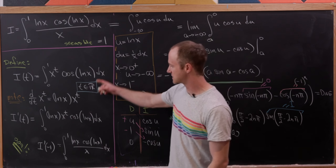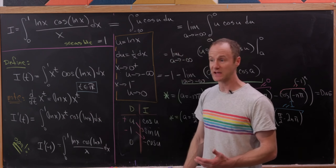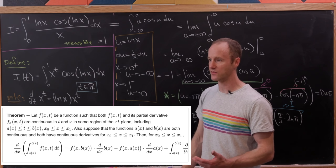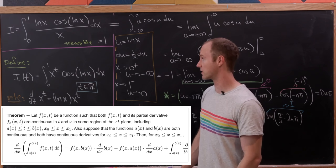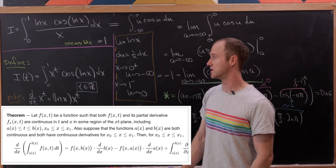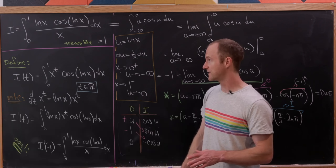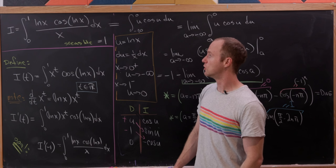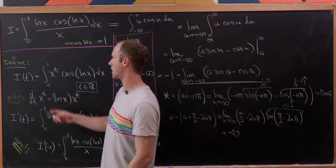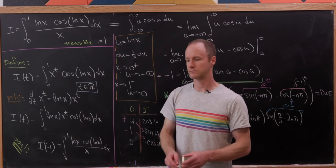So what happened? Why did the Feynman technique not work? That's because we didn't satisfy the hypotheses of the theorem allowing us to take the derivative under the integral sign — hypotheses having to do with the function being continuous on the closed interval. And that's a good place to stop.